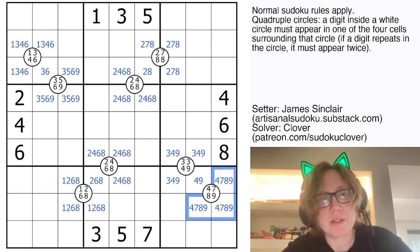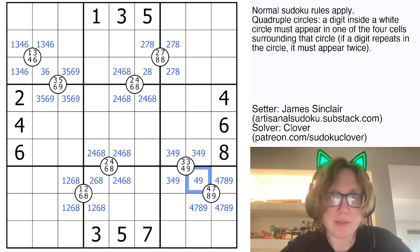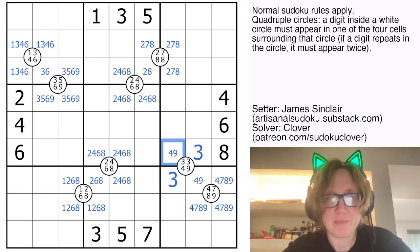And I'm going to start down here in this corner because this cell can't be a three because it's in the overlap with this four, seven, eight, nine. And so to have two threes here they have to be there and there. I have this four and eight here that eliminate four and eight from these cells.